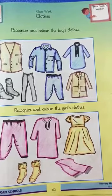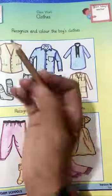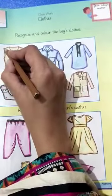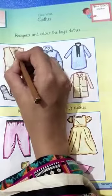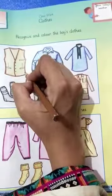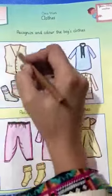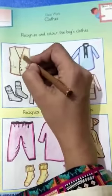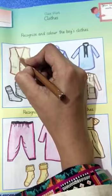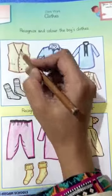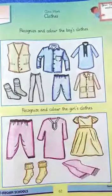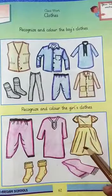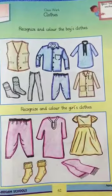Let's start colouring them. Take dark brown colour and make an outline like this. Then do light colour in it. You will do the same colour in the remaining clothes as it is done in front of you on this page.